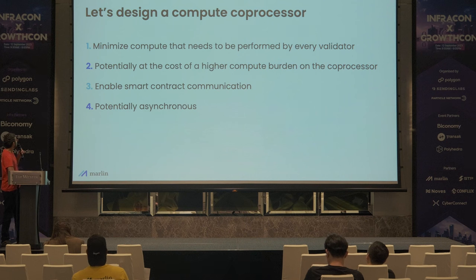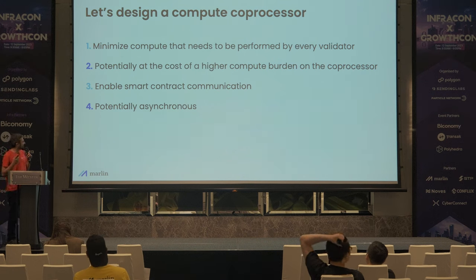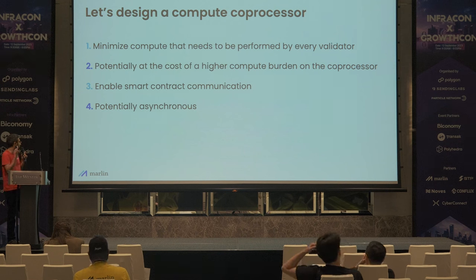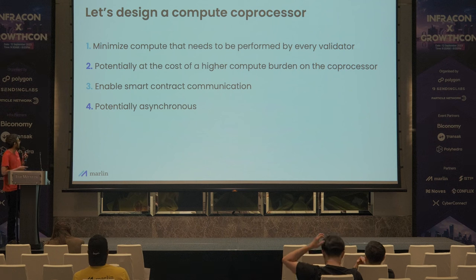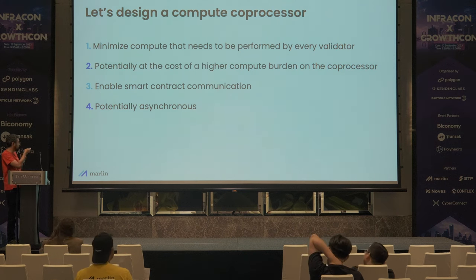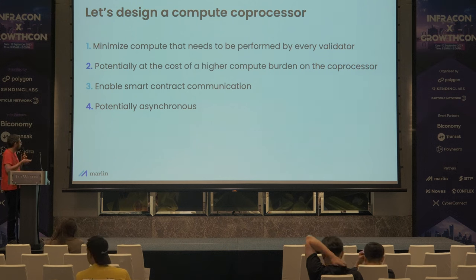I have a few goals here. All compute is basically performed by any validator, so let's minimize the amount that needs to be done. While doing this, I'm fine incurring the cost on the co-processor itself — doing this case better. And obviously I want it to be usable from the blockchain, so I need smart contract communication. And I'm going to make it as a module.